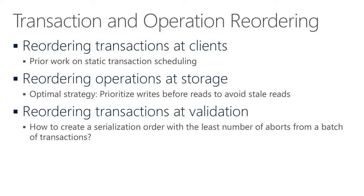Before validation, a component batches validation requests and reorders transactions to achieve a better serialization order. There are multiple points where transactions are batched and reordered — even before entering the system, in the client, you could decide which order to issue transactions to reduce conflict. We focus here on reordering operations at storage and reordering transactions at validation. The optimal storage strategy is to prioritize all writes before all reads in a batch, so reads don't see stale state updated by others in the batch.